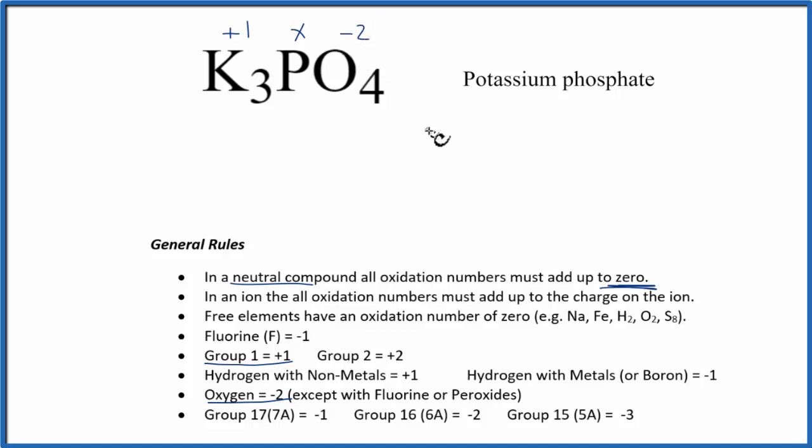With that, we have all the information we need to figure out the oxidation number on the phosphorus here in K3PO4. Let's set an equation up to do that. We have 3 potassium atoms, and each one is plus 1. We'll add to that phosphorus, which we don't know. And then we have 4 oxygen atoms, each one is minus 2. And we said all of that has to equal 0.